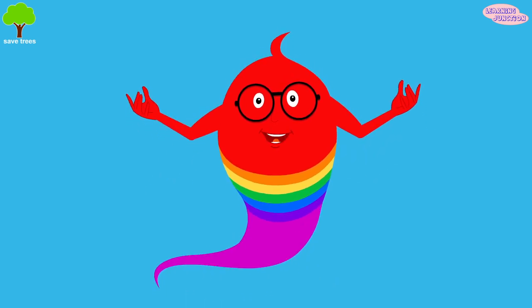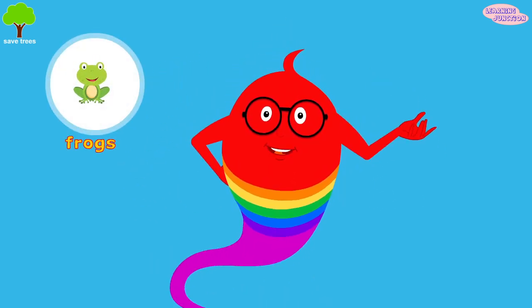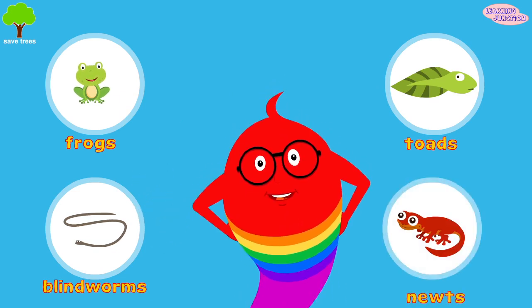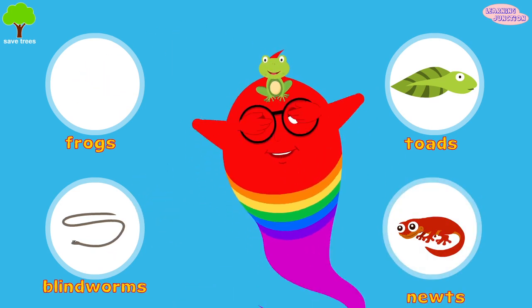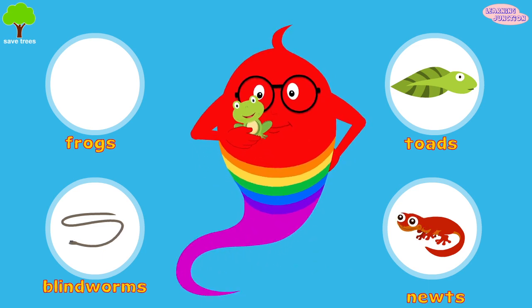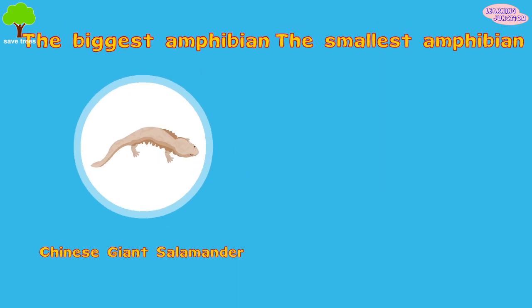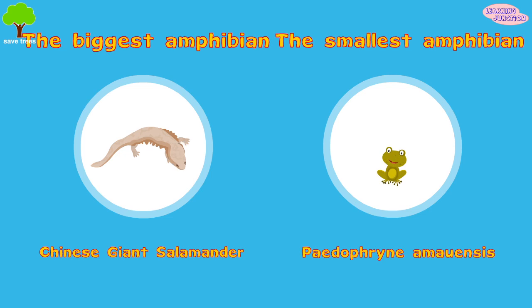Some examples of amphibians are frogs, toads, blind worms, and newts. The biggest amphibian is the Chinese giant salamander, and the smallest amphibian is a frog called the Paedophryne amauensis.